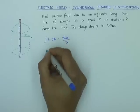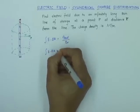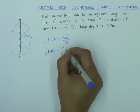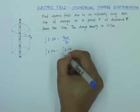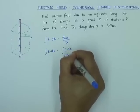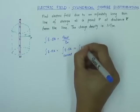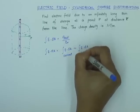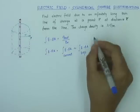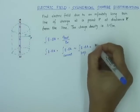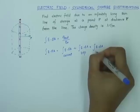So I can write this as: integral of E dot dA over the curved surface, plus integral of E dot dA over the top surface (which is a circle), plus integral of E dot dA over the bottom surface.